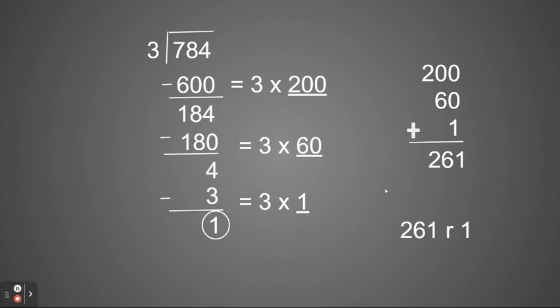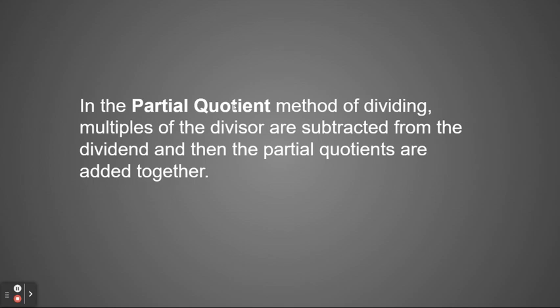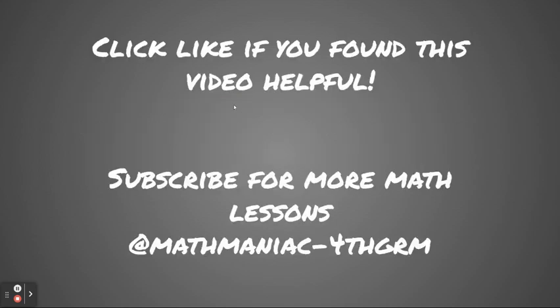So as you can see in this process or strategy, you're able to use multiplication facts that are easy and think about place values of hundreds, tens, and ones to divide and break up that division into different chunks. So again, in the partial quotient method of dividing, we look at multiples of the divisor that are subtracted from the dividend, and then the partial quotients are added together. I hope that you found this helpful. Please click like below and subscribe for more lessons from the Math Maniac.